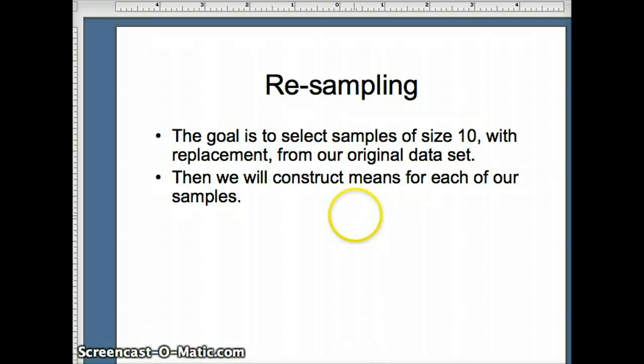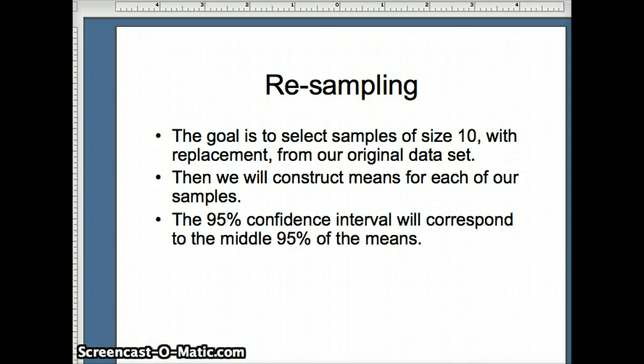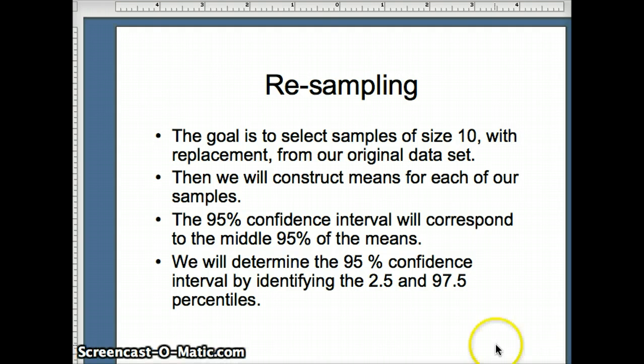Then we're going to construct means for each of our samples. And we are looking for a 95% confidence interval, so we're going to focus on the middle 95% of the means. So we're going to throw out the tails, but the middle 95% would mean we're looking for between the 2.5 percentile and the 97.5 percentile to define this 95% confidence interval for mu.